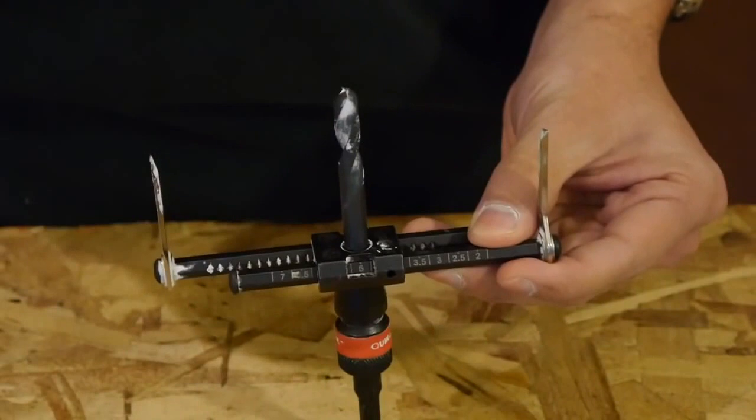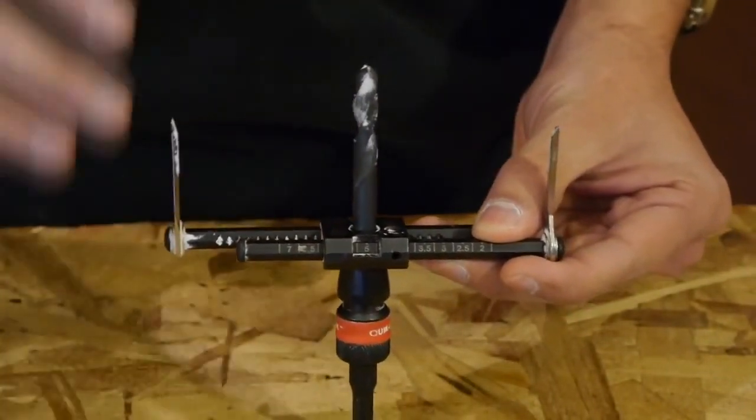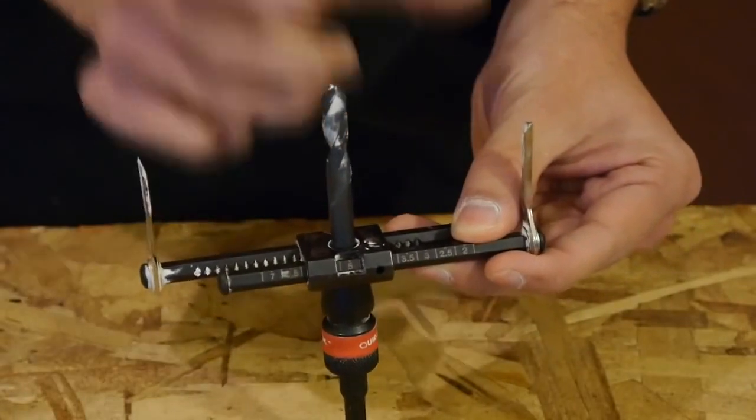So with one of these adjustable hole cutters, it can essentially replace an entire hole saw set. You can tell Milwaukee put a lot of thought and effort into designing these as they're very easy to use and setup, and it's completely tool-less to adjust the diameter of the hole being cut.